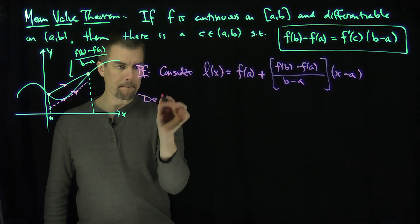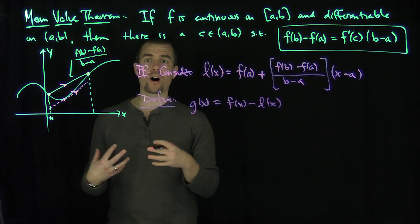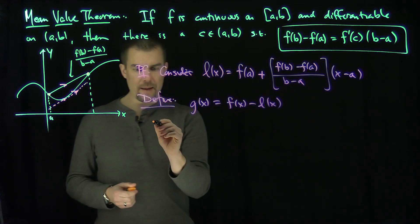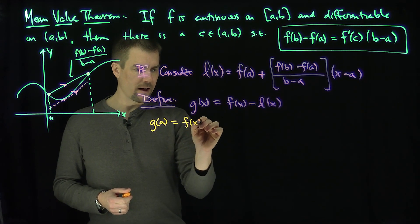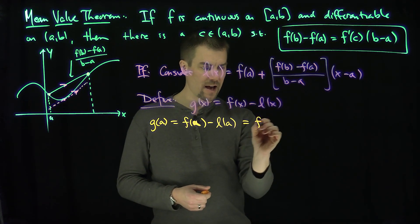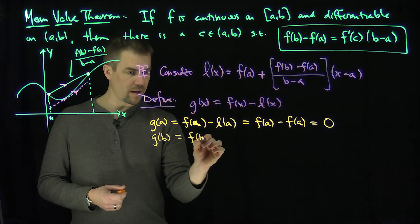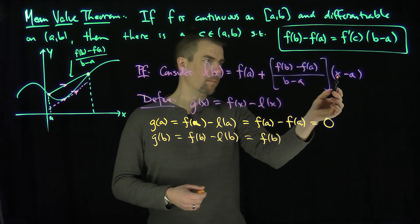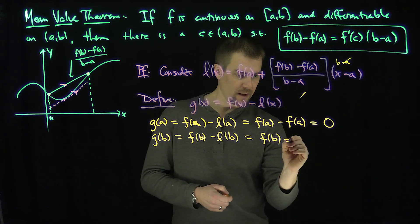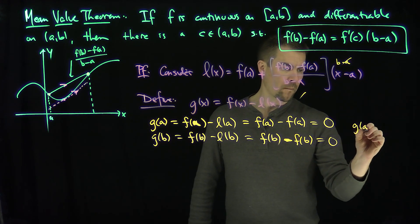Now what we're going to do is define g of x, which is f of x minus l of x — I take the function and subtract off the secant line from it. The cool thing about this is: g of a equals f of a minus l of a, and we know l of a is f of a, so this is f of a minus f of a, which equals zero. And g of b is f of b minus l of b. When I plug in b, the b minus a cancels, and I'll have f of b minus f of b, which also equals zero. So g of a is equal to g of b.